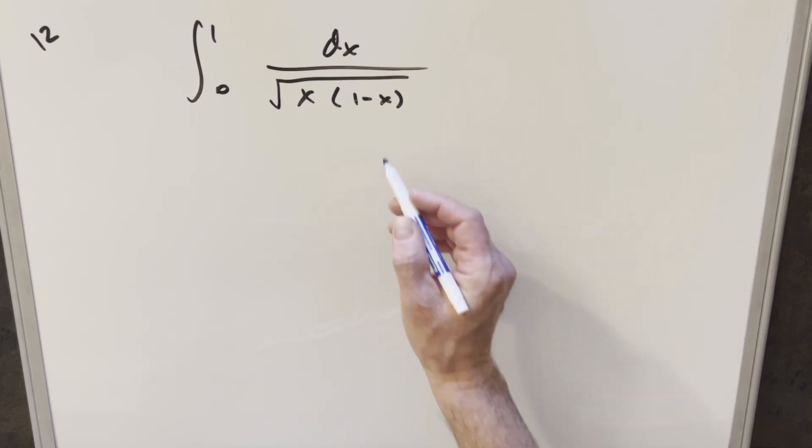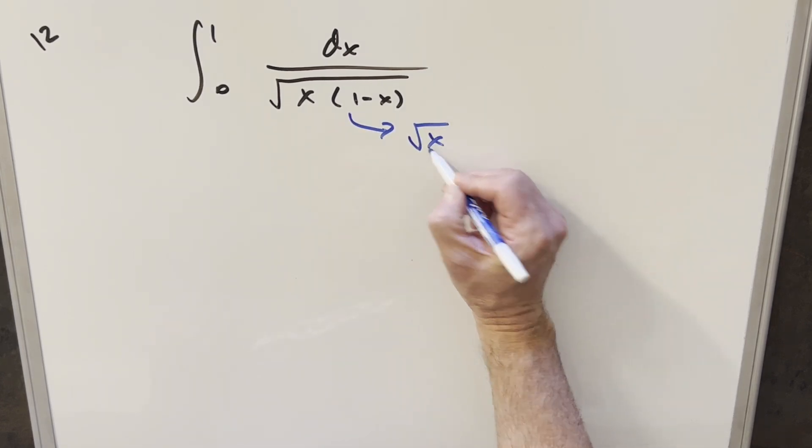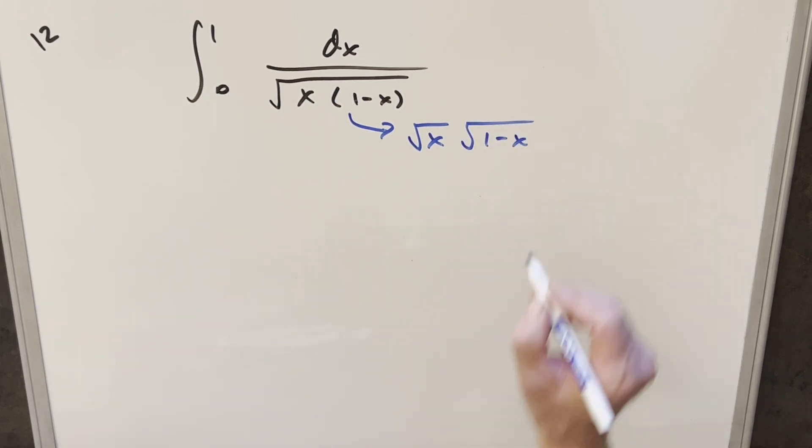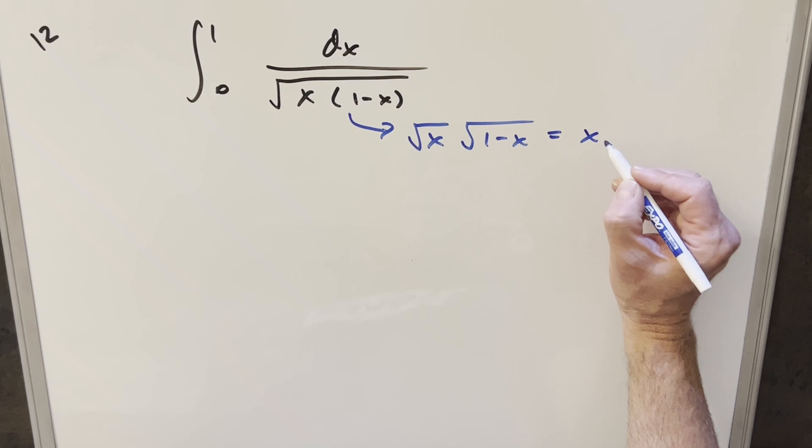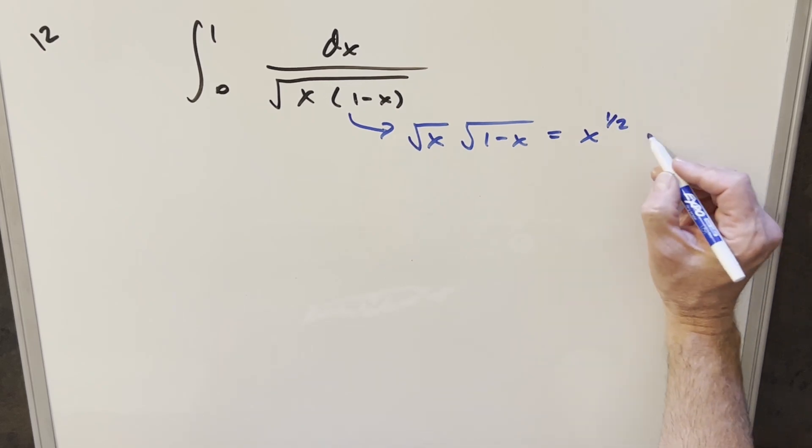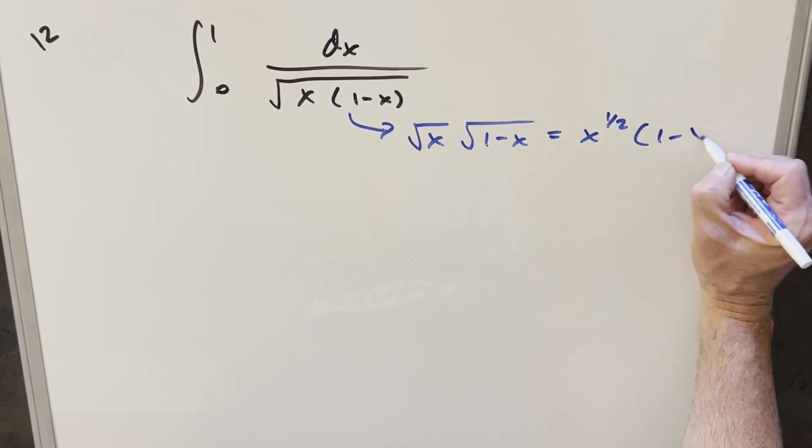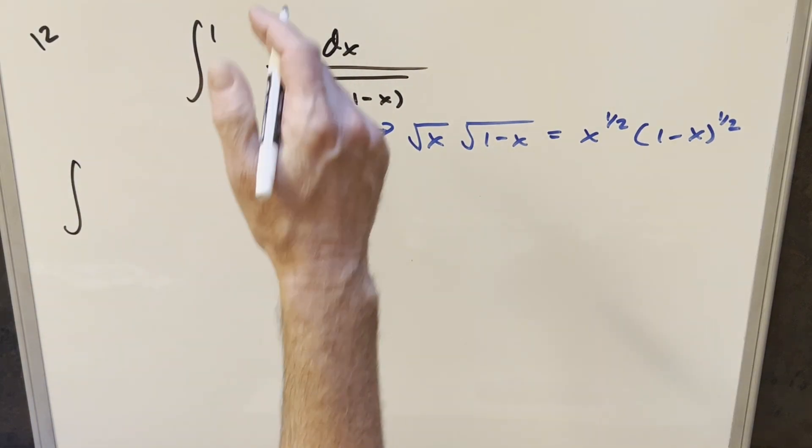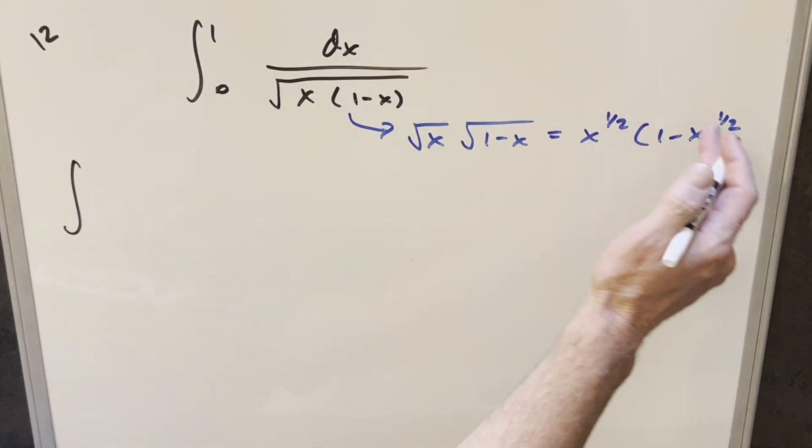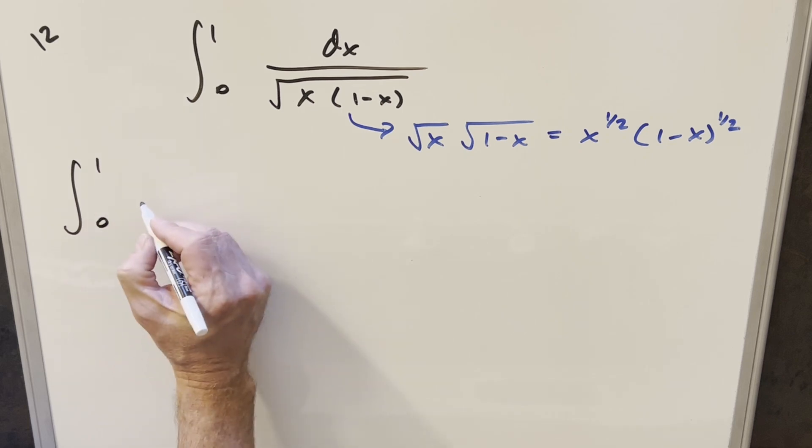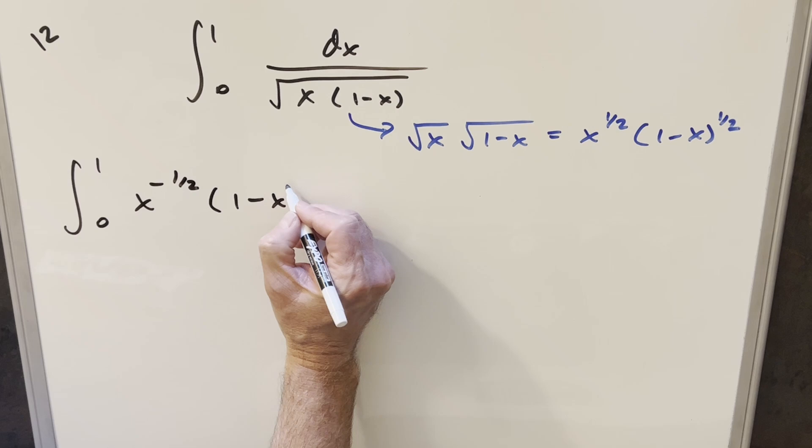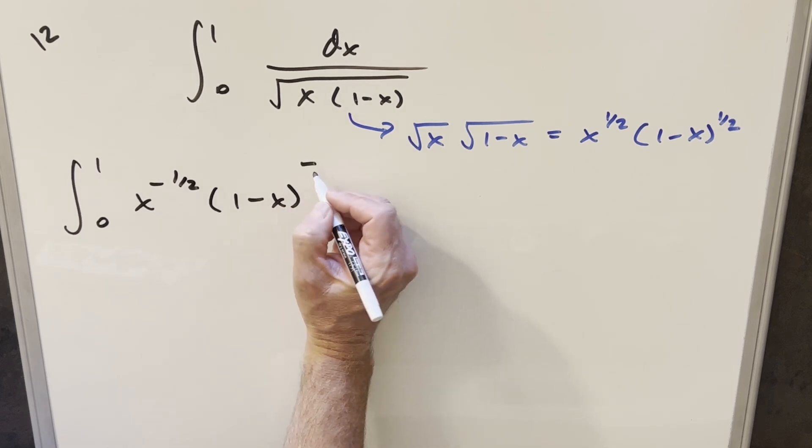Okay, to get started with this, really what I want to do is just kind of break this up. For this square root, we can separate this as square root of x times square root 1 minus x. But actually what I want to do is I'm going to use this notation instead. I'm going to write it as 1 half powers for each of these. And then let's just rewrite this integral, but let's take this and bring it into the numerator so everything is going to become a minus 1 half power. So we're still going 0 to 1. This becomes x minus 1 half times 1 minus x minus 1 half.